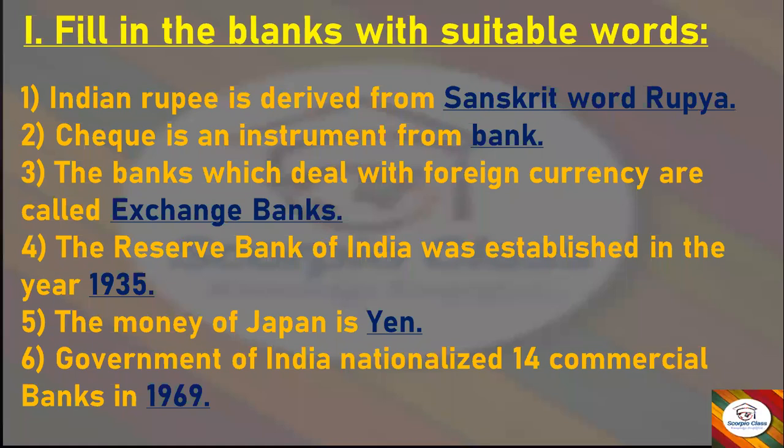Now let's get started with the first main, that is Fill in the Blanks. First: Indian rupee is derived from — answer is Sanskrit word 'Rupiah'. Next: A cheque is an instrument from — answer is bank. Next: The banks which deal with foreign currency are called — answer is exchange banks. Next: The Reserve Bank of India was established in the year — answer is 1935. Next: The money of Japan is — answer is Yen. Next: Government of India nationalized 14 commercial banks in — answer is 1969.